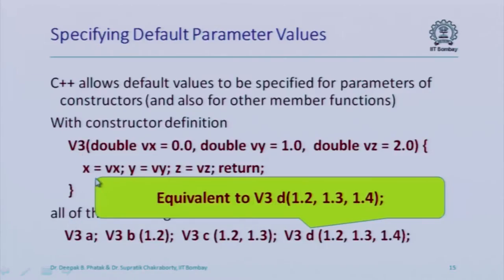If you declare another constructor which does not take any parameters, and you also have a constructor with all-default parameters, the compiler will complain that there are two possible ambiguous ways to call the constructor. You have to rewrite accordingly. If you always know the value of vz but not vx and vy, you can write the parameter list as vz first, then vx, vy. But if you have written first vx, vy, and then vz, specifying a partial list of parameters in the middle cannot be done.